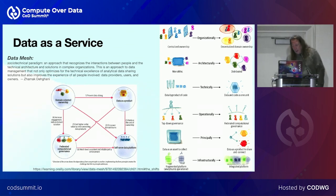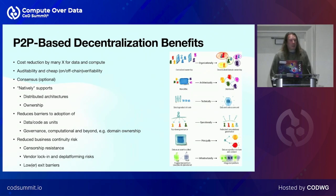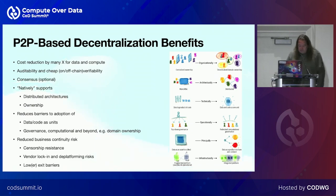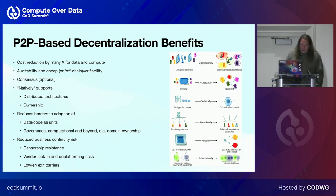Data as a service and data as a product with ownership within enterprises or organizations is certainly real. A lot of the pain points in organizations handling data align very well with solutions Web3 has to propose. Decentralization benefits include cost reductions by many factors for data and compute, auditability, consensus if optional, distributed architectures, ownership control, and reduced barriers to adoption of data and code as units and governance.